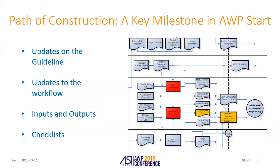Path of construction is something that, if you look at our COAA website, is fairly dated. We've spent the last two or three years updating it, and this year we'll go live with our new path of construction procedure with updates. We're definitely updating the workflow to align more with AWP, because when we first set it up we were only looking at workface planning, not AWP. We've got new checklists to go along with it — it's a brand new procedure. It won't be coming out until late this year or beginning of 2019.